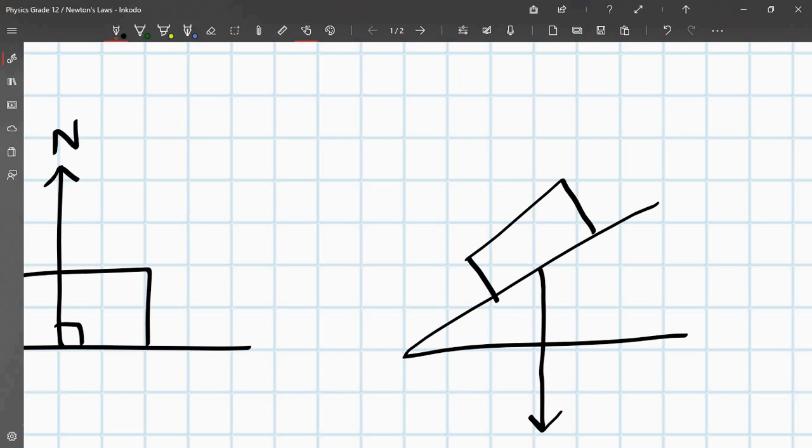if the force of, you know the force of gravity always acts downwards, but the normal force doesn't always act upwards. It always acts perpendicular to the surface. So this is what the normal force would look like.